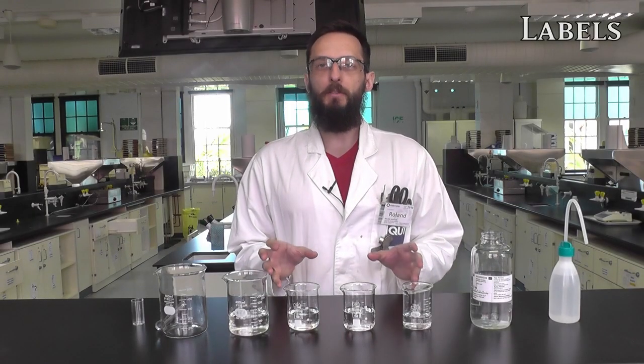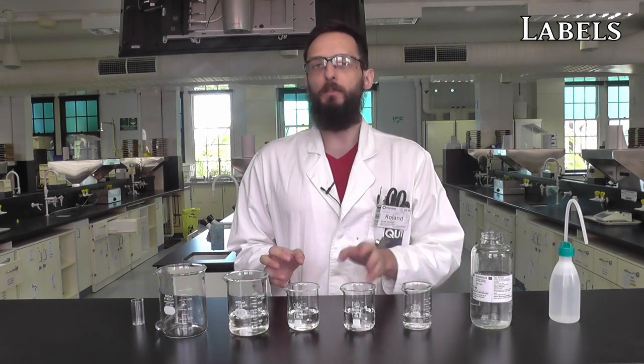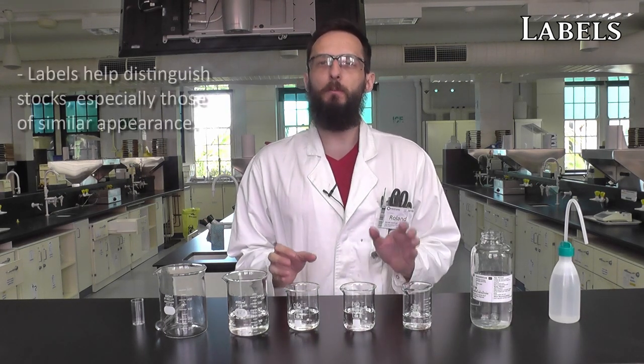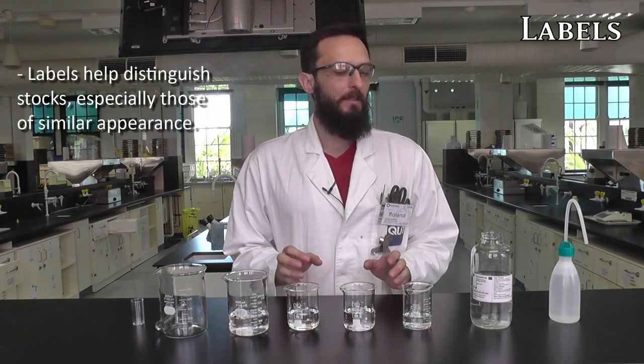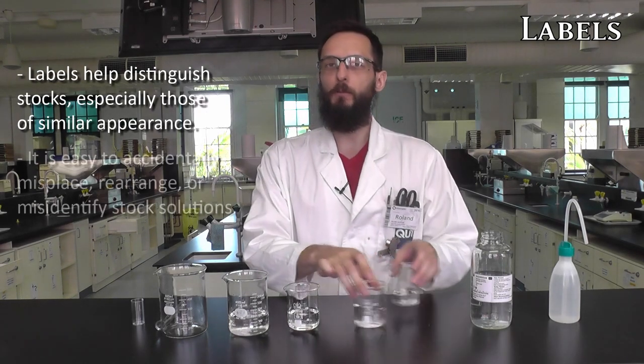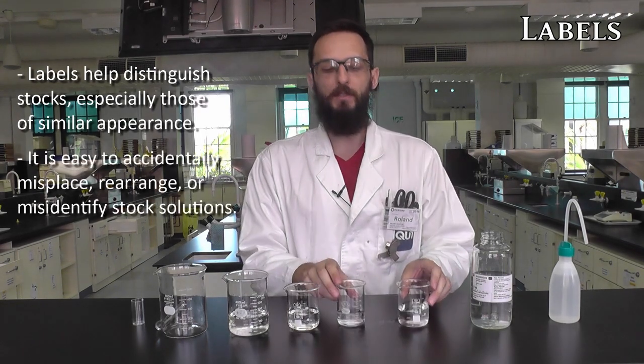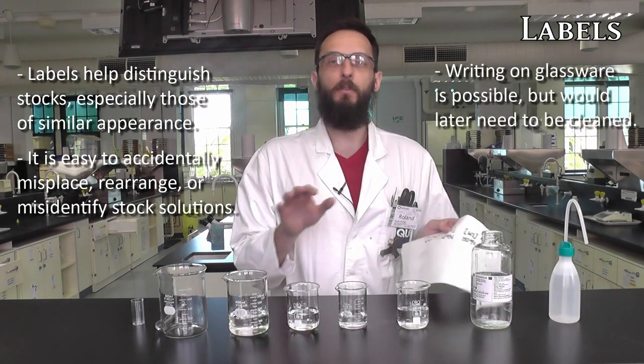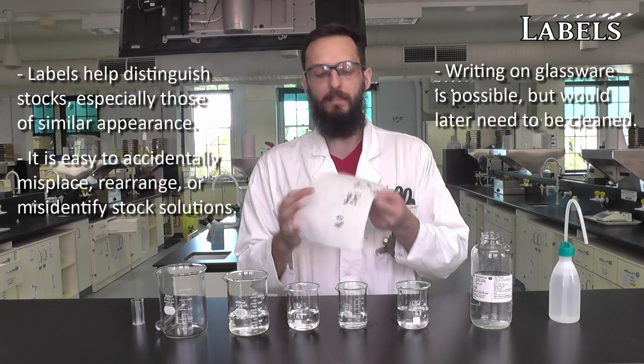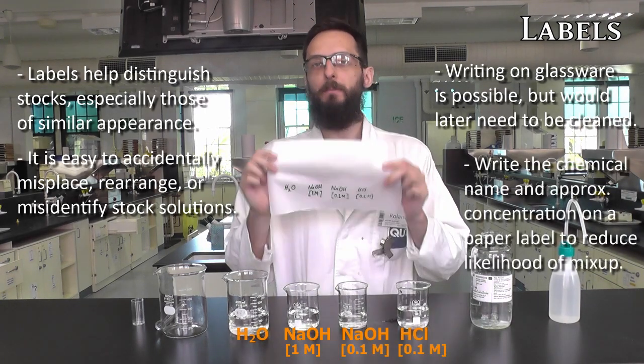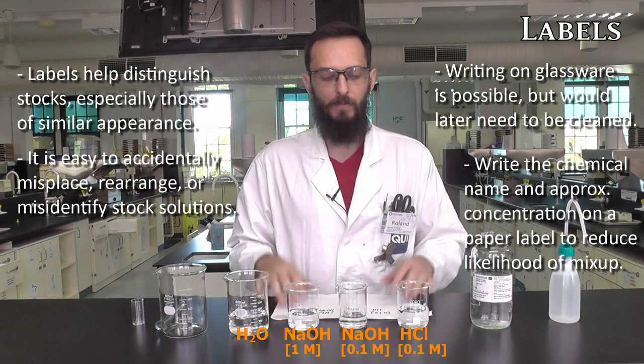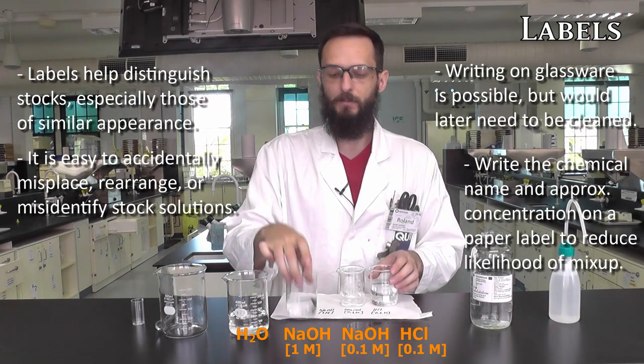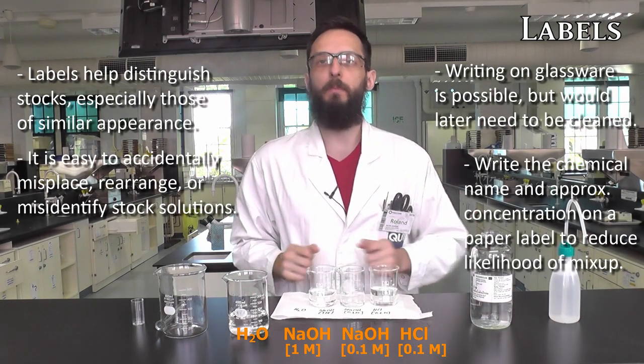A lot of the time when you're working in the laboratory, you may find you wind up with solutions that are colorless and odorless, and there's no real way to differentiate between them easily. So rather than risking confusion if you were to misplace the stocks, you can label each of them. Rather than writing on the glassware directly, which just means more cleaning later, I would recommend getting some paper towel and drawing small labels that include the chemical name and the concentration, and then just put them in the right spot.